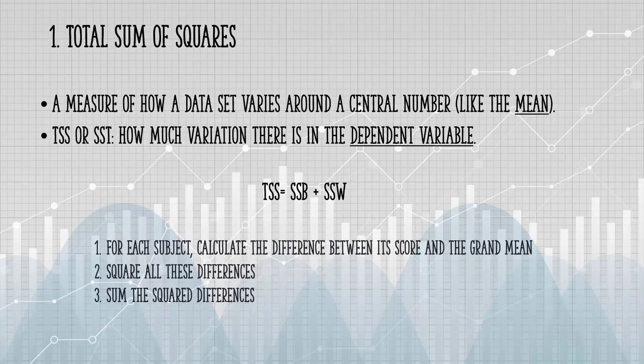If you don't have that data, you can calculate the total sum of squares by calculating the difference between each score and the grand mean. You then square all the differences and then add those differences up.